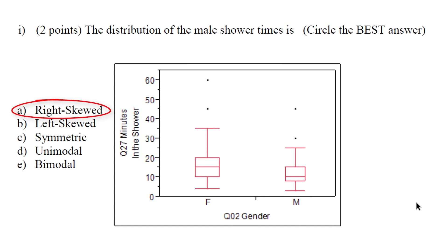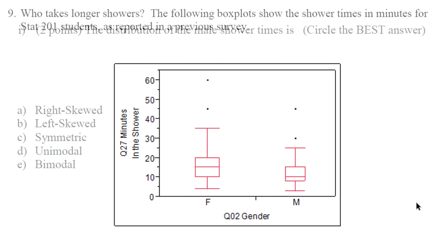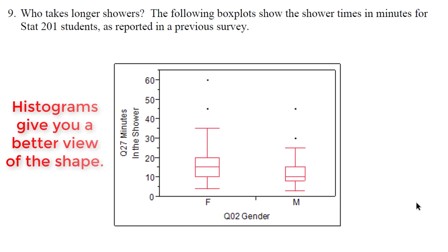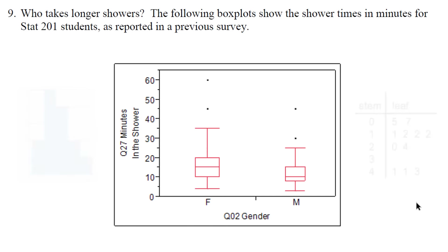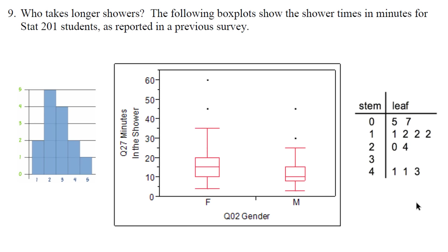This distribution has a little bit of a right skew from what we can see, but a better way to view it would be with a histogram or a stem-and-leaf plot. Both a histogram and a stem-and-leaf plot are quantitative visual displays. A stem-and-leaf, histogram, and box plot are your univariate quantitative displays of data.